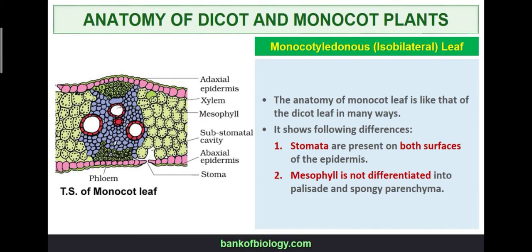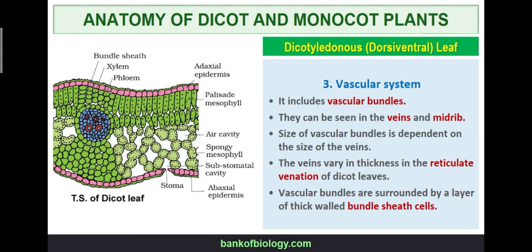In the next class we will discuss the monocot leaf, which is isobilateral. If you have any topic-related questions, please ask. After completing the video, please read the whole theoretical portion and clear the diagrams. See you all in the next class — thank you.